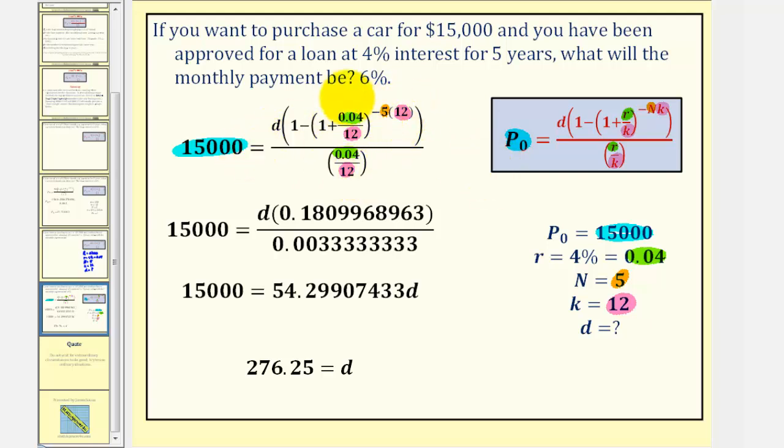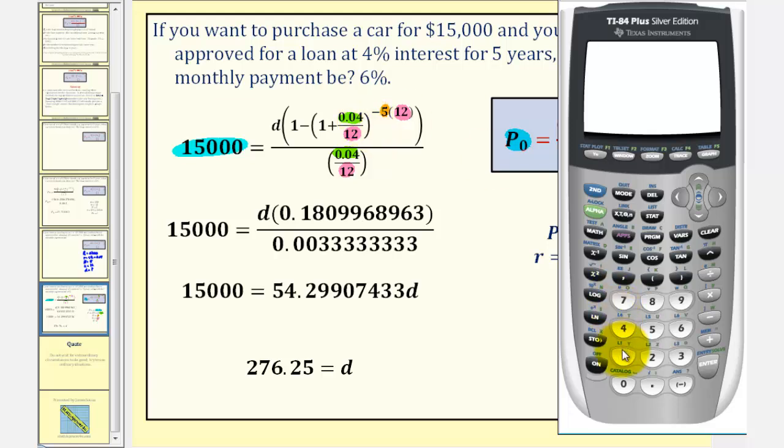Now we want to solve for D, so we'll begin by simplifying inside the parentheses in the numerator, and then in the denominator. Looking at the numerator inside the parentheses, we'd have 1 minus the quantity (1 + 0.04 / 12), close parenthesis, we're going to raise this to the power of negative 60, we'll raise it to the power of negative five times 12, which gives us this decimal here. Notice how this is still multiplied by D, though. In our denominator, we have 0.04 divided by 12, which gives us this decimal here.